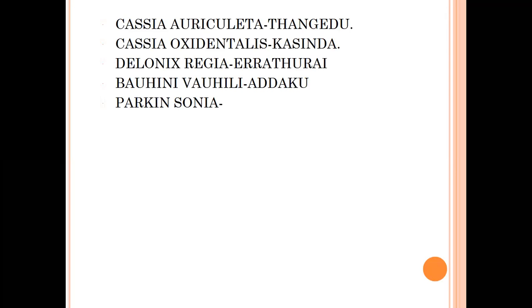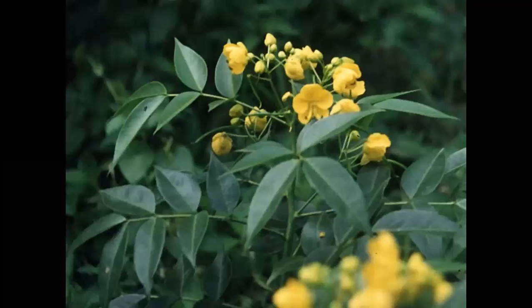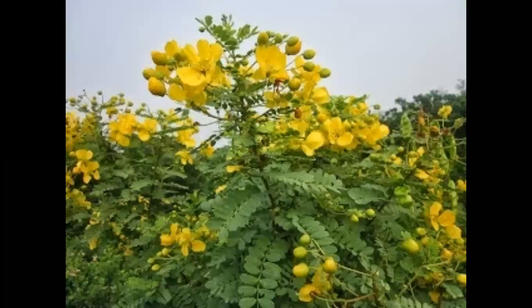Regarding habitat, the Caesalpinaceae family plants are mainly mesophytic plants. Key example plants for study are Cassia occidentalis and Cassia auriculata (Tangedu). These plants are developed in the mesophytic region, so the habitat of Caesalpinaceae belongs to mesophytes.